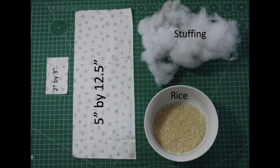You're going to need some rice and stuffing so you can fill up the phone holder and we're going to need some fabric, 5 inch by 12.5 inch and a smaller piece, 2 inch by 3 inch.